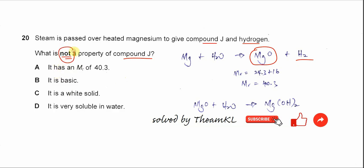not the property. Option A: it has a molar mass of 40.3. That's 24.3 plus 16, so the molar mass is 40.3 - correct. Option B: it is basic. This is also correct because when magnesium oxide